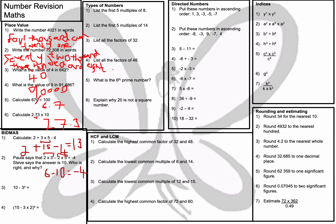Question number 3: 10 take away 3 to the power of 2. Well, 3 to the power of 2 means 3 squared, so 3 times 3, which is 9. 10 take away 9 is equal to 1.